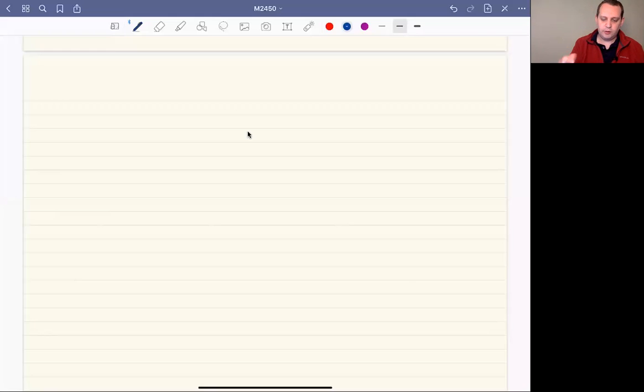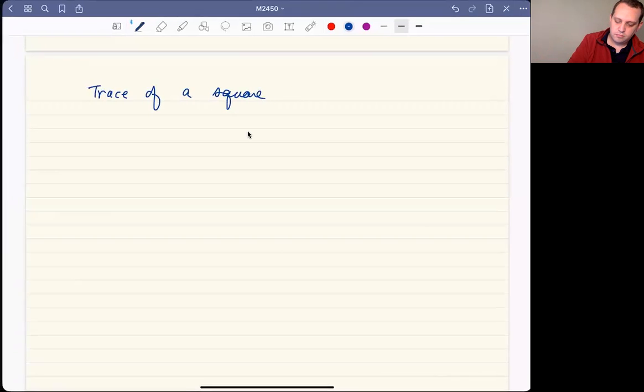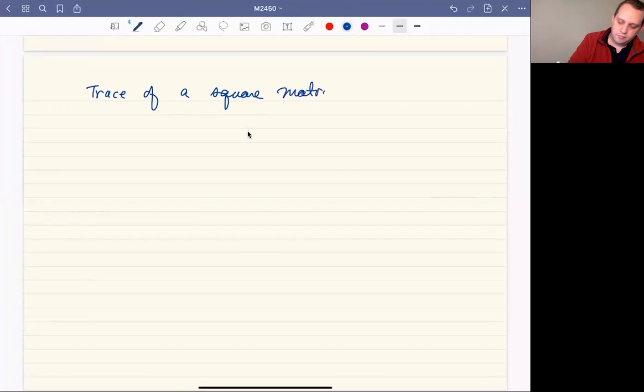One super short video I want to make is about another operation that's used just like the determinant, and that's called the trace. So the trace of a square matrix A is just the sum of the diagonals. Let's do this with some examples.